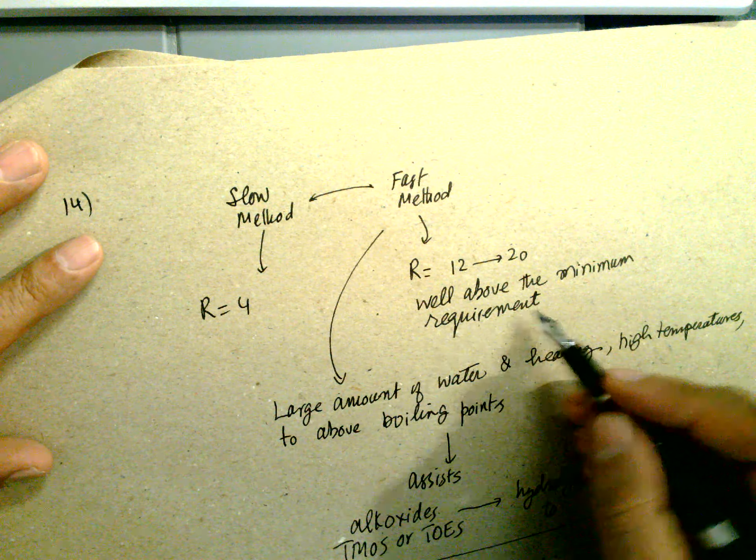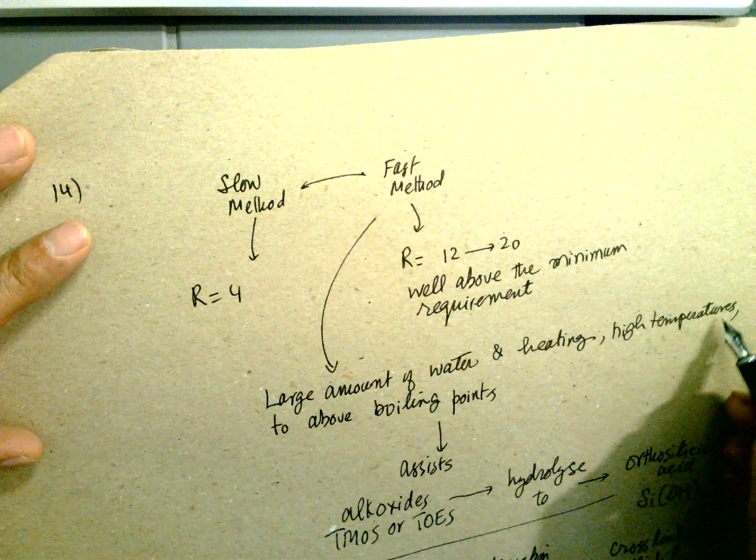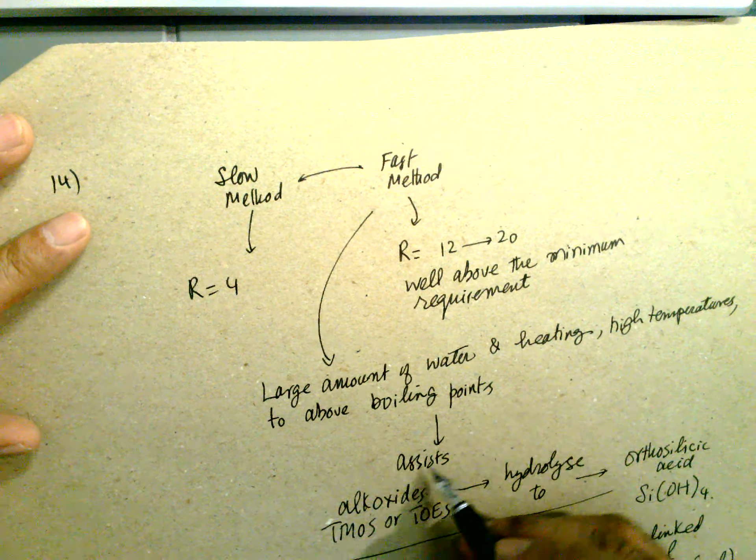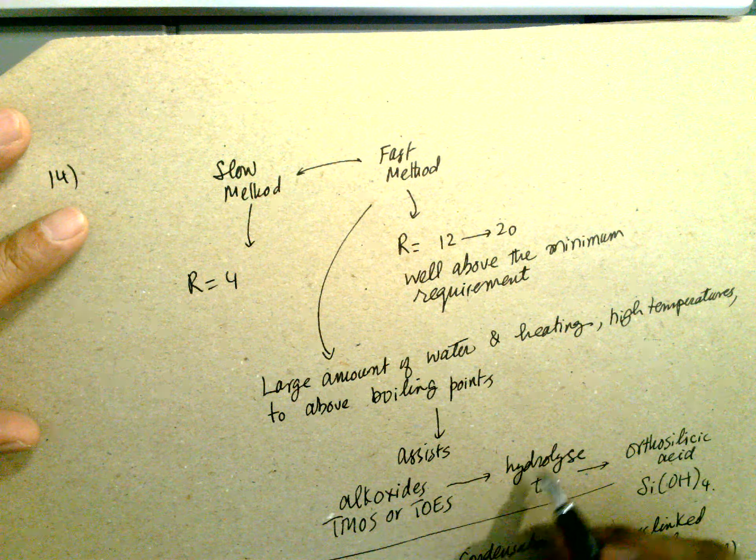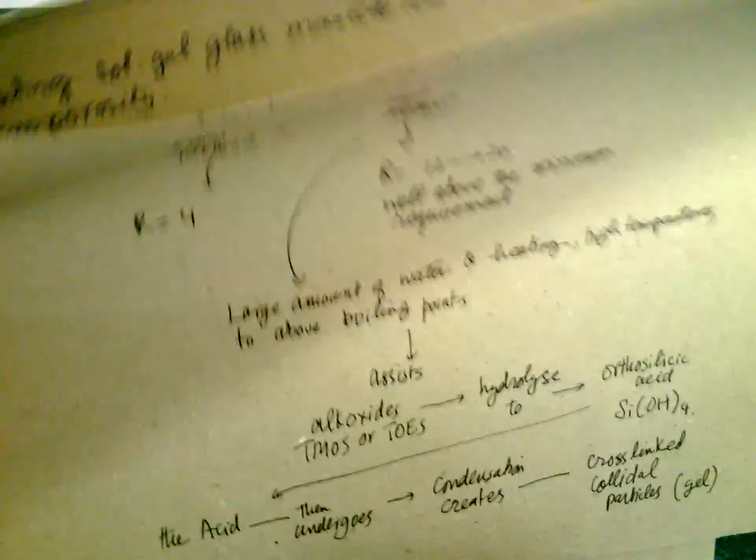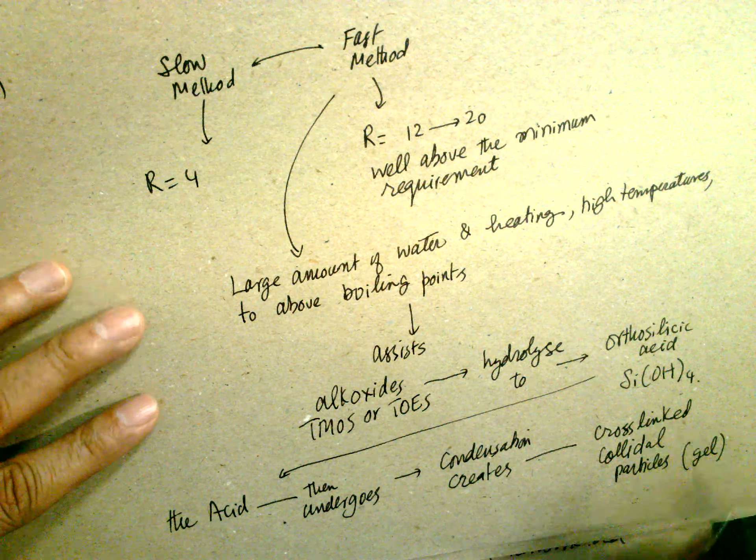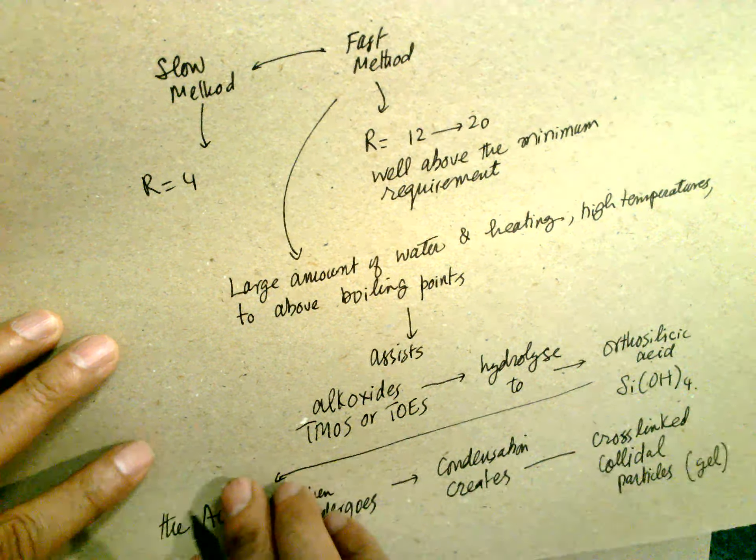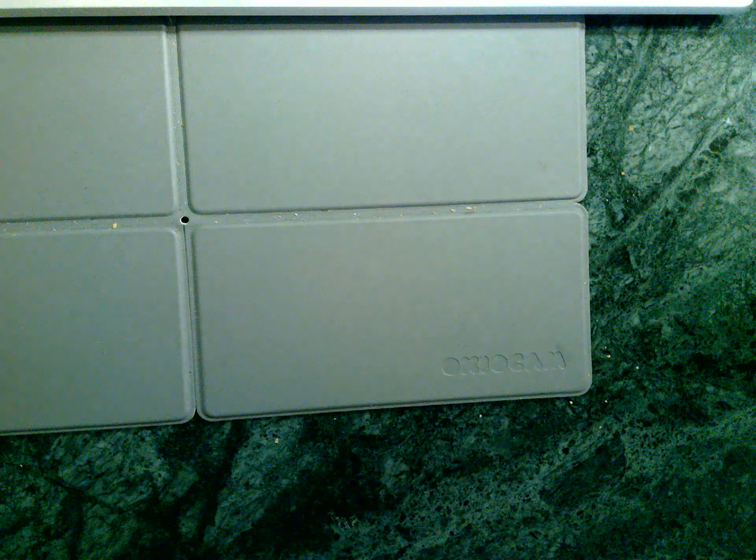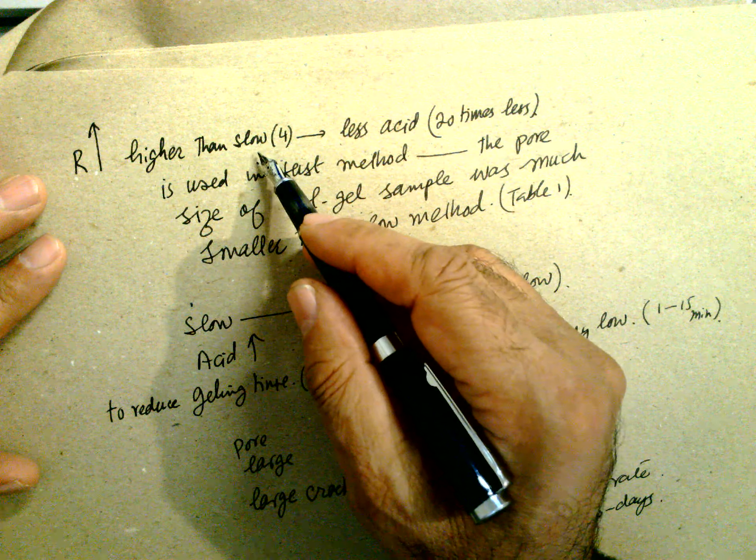Slow method, R equals 4. Fast method, R equals 12 to 20, well above the minimum requirement of R4. Large amount of water and heating, higher temperature above the boiling point associated with the alkoxide and TMOS hydrolysis to orthosilicate. Acid undergoes the condensation, creates cross-linked colloidal particles, so gels.